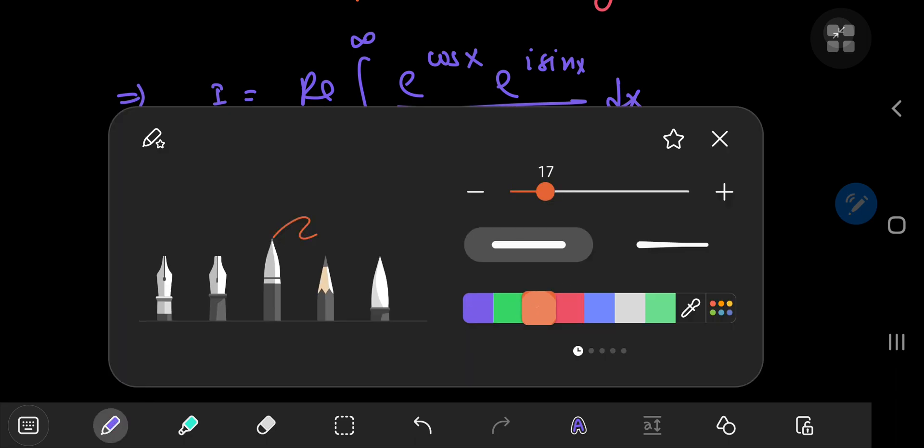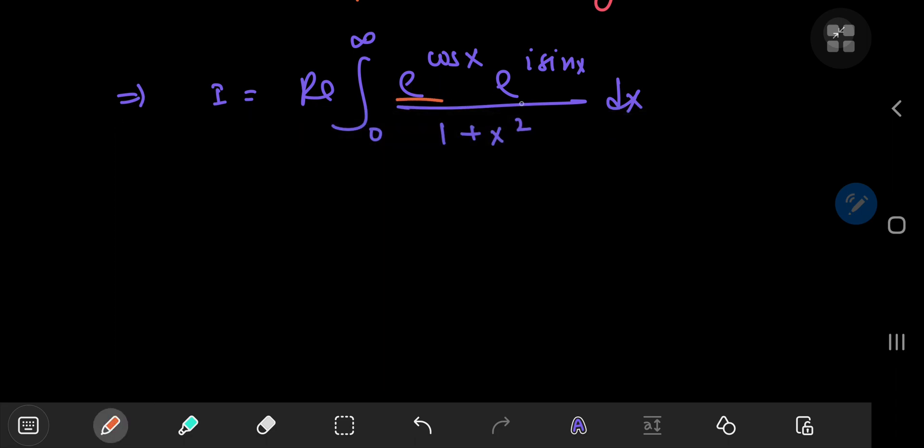I can use the properties of the exponential function, and when these two are multiplied, their exponents will add up. So e to the cosine of x plus i times the sine of x divided by 1 plus x squared dx.